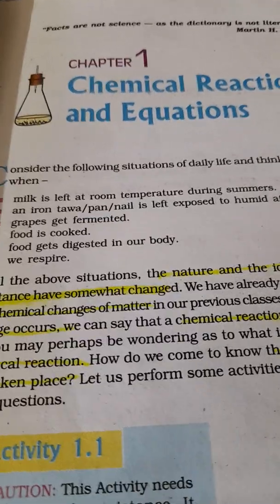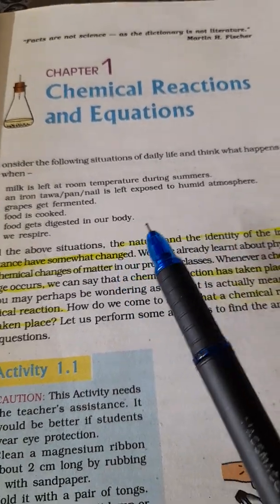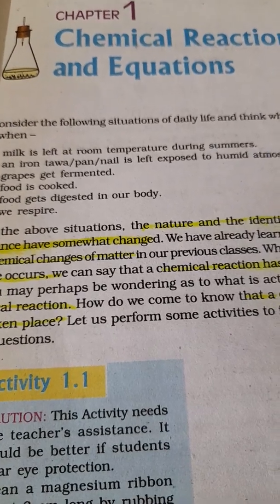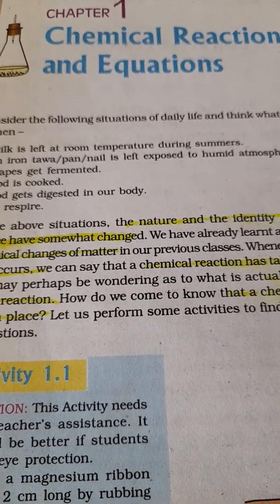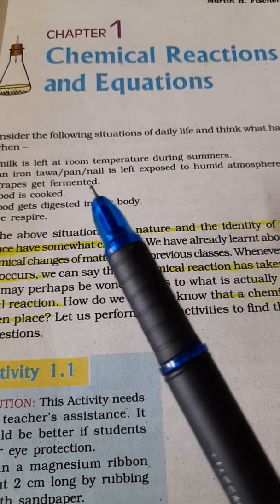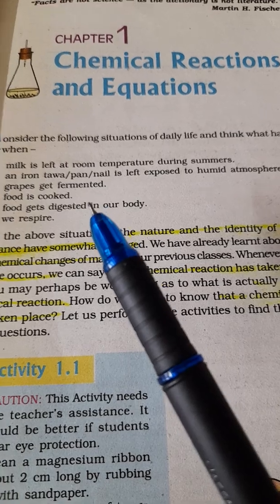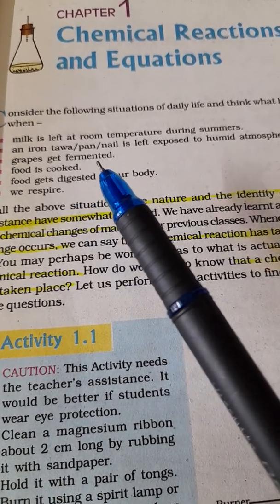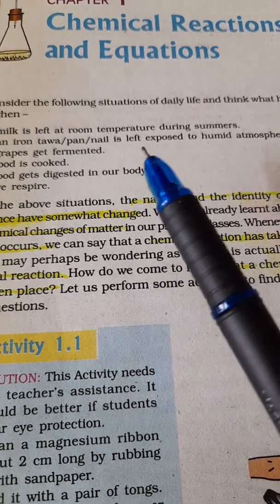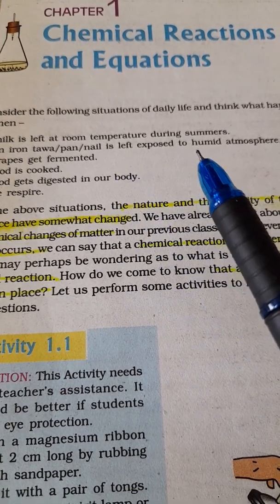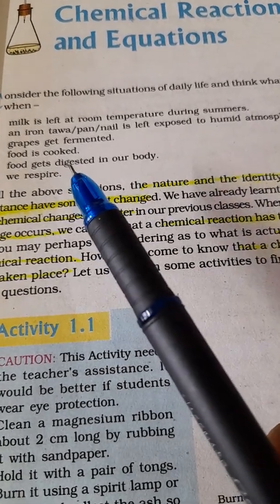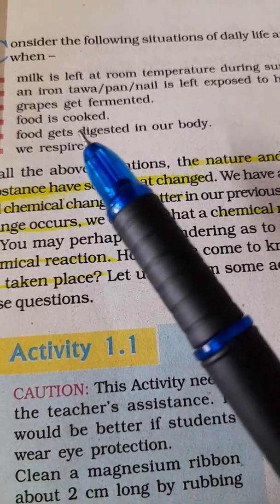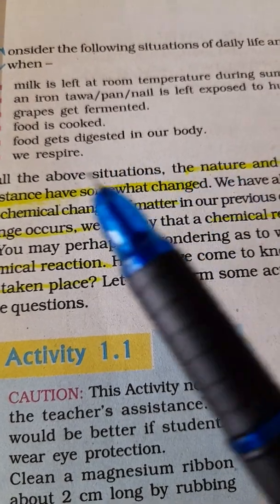First, let us consider some situations of daily life. What happens when you keep milk at room temperature during summer season? Your mothers keep it in the fridge immediately. An iron tawa or iron nail left in humid atmosphere, grapes after some days get fermented and turn sour in taste, food is cooked or digested in your body, and when you respire.